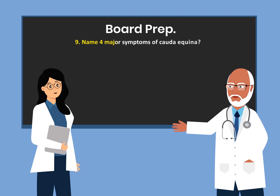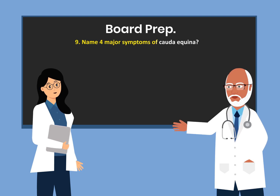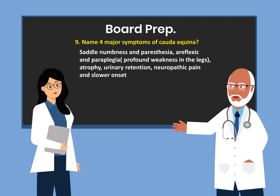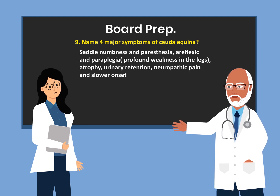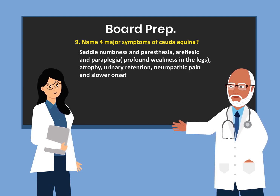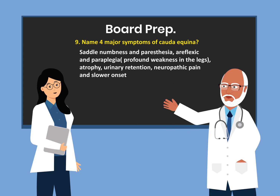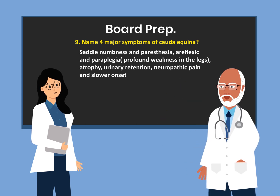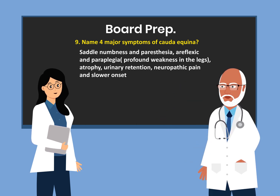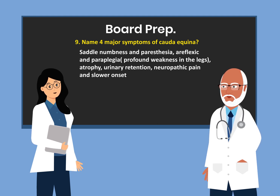Name four major symptoms of cauda equina. Saddle numbness and paresthesia, areflexia, and paraplegia with profound weakness in the legs. Atrophy, urinary retention, neuropathic pain, and it has a slow onset.